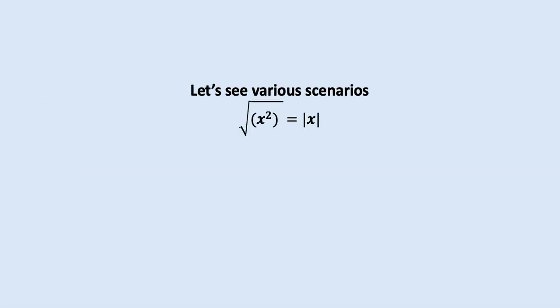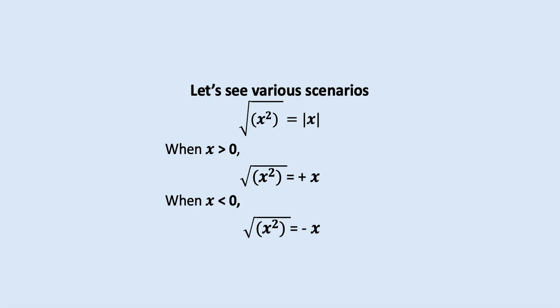Because initially x could be positive or negative, but the final answer must be positive since we are considering the principal square root. To make that positive, we take the absolute value. When x is initially positive, the result is positive x. When x is negative, to make the answer positive, we multiply by −1, giving a positive value. If x is zero, the result is zero. So in this fourth scenario, the answer is the absolute value of the variable, giving a non-negative result.